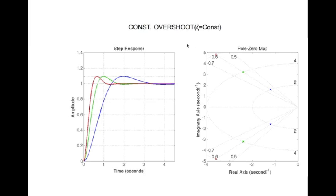Here we have three systems that have constant damping, which means they should have constant overshoot. The corresponding complex poles are at zeta equal to 0.6 — here, here, and here. And here are the corresponding step responses. As you can see, they have the same percentage overshoot, but different peak times, different settling times, and different rise times.